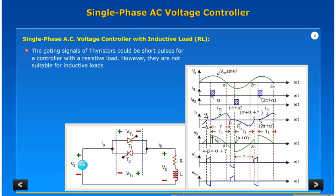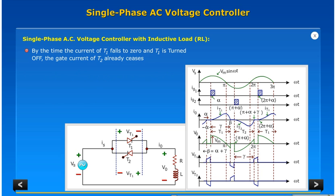The gating signals of thyristors could be short pulses for a controller with a resistive load. However they are not suitable for inductive loads. When thyristor T2 is fired, thyristor T1 is still conducting due to inductive load. By the time the current through T1 falls to zero and T1 is turned off, the gate current of T2 already ceases. Consequently T2 will not be turned on.